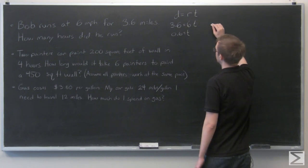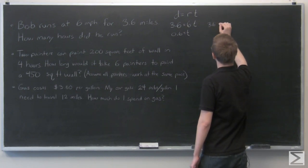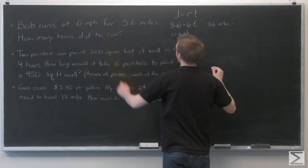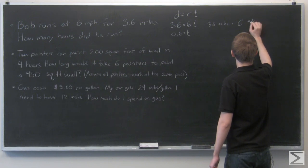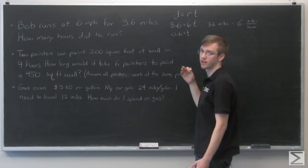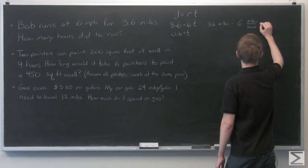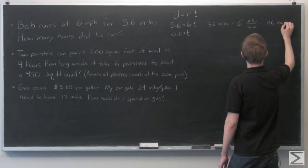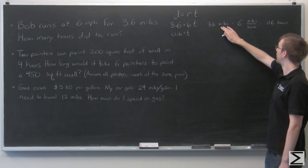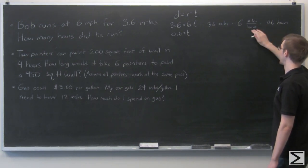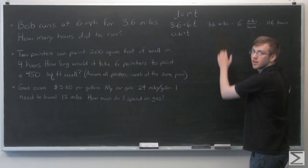Let's just double check the units to make sure we did that right. 3.6 miles equals 6 miles per hour times T hours. And here we see miles equals miles per hour times hours. So hours cancel out and we get miles on both sides.